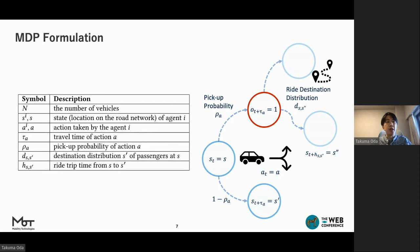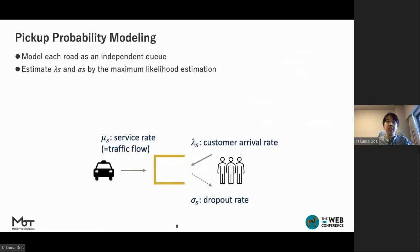We consider each road as independent queue, such that the ride will occur if passengers are in the queue when vehicle passes. Consider the situation where on road S, potential passengers occur at arrival rate lambda and empty vehicles pass at a service rate mu, and the passenger will disappear at a certain dropout rate sigma. This means that the waiting queue rank, the probability of ride occurrence rho, and the number of rides m are represented as shown.